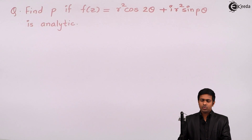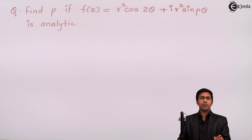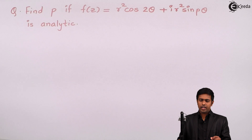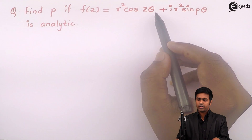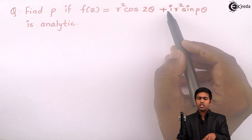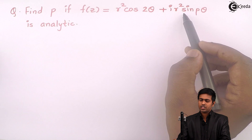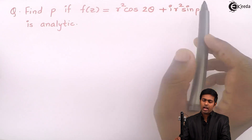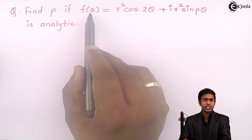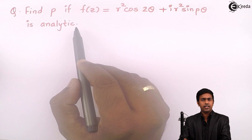Hi friends. We have to find out the value of p if f of z is given as r square cos 2 theta plus i r square sin p theta, and f of z is analytic.